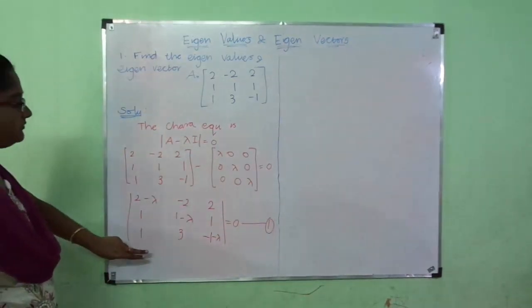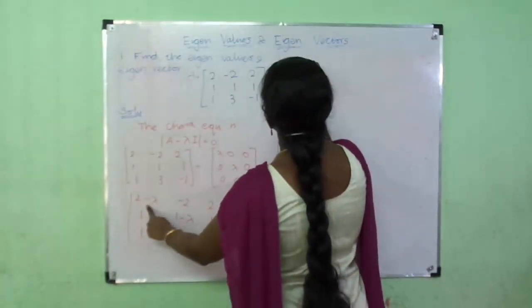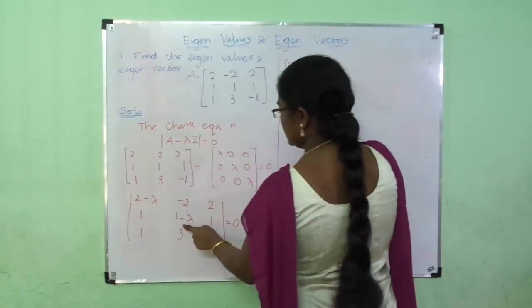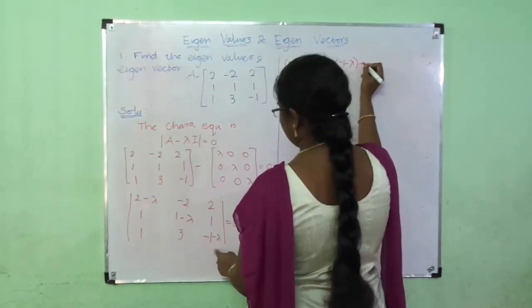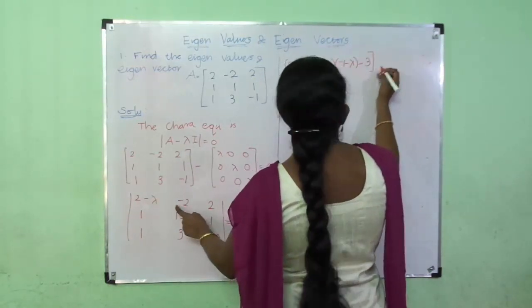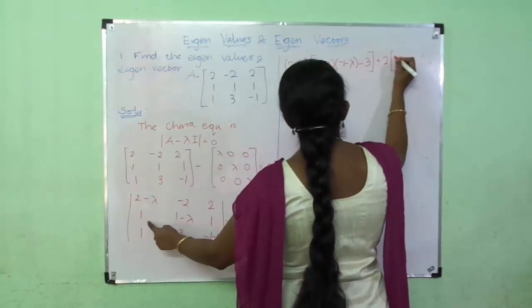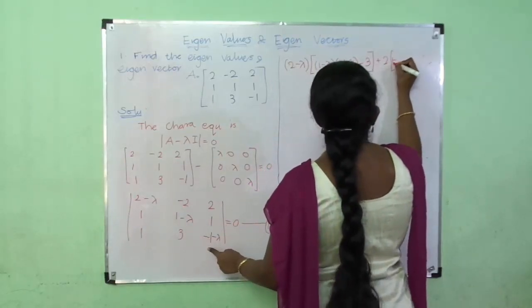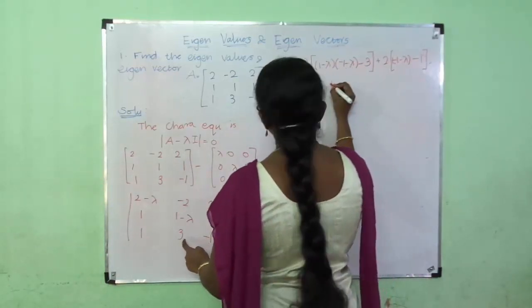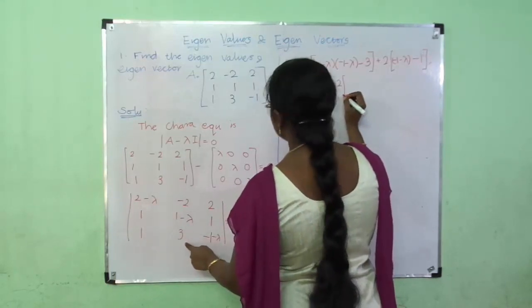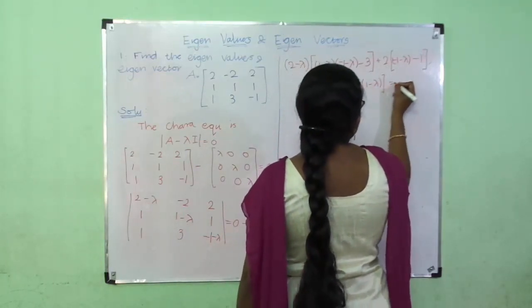Now we find the determinant of this equation. We expand: (2-λ) times [(1-λ)(-1) - (1)(3)] minus (-2) times [(1)(-1) - (1)(1)] plus (2) times [(1)(3) - (1-λ)(1)], which is equal to 0.